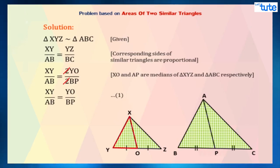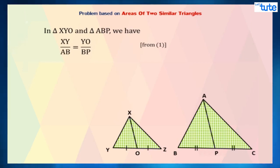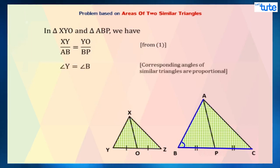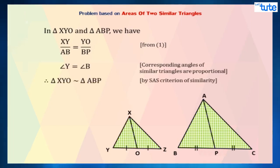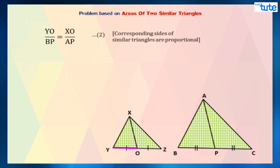Now, in triangle XYO and triangle ABP, we have XY upon AB equals YO upon BP. And since corresponding angles of similar triangles XYZ and ABC are equal, we can say that angle Y equals angle B. Therefore, by SAS criterion of similarity, we can say that triangle XYO is similar to triangle ABP. Since corresponding sides of similar triangles are proportional, we can say that YO upon BP equals XO upon AP. Consider this as equation 2.